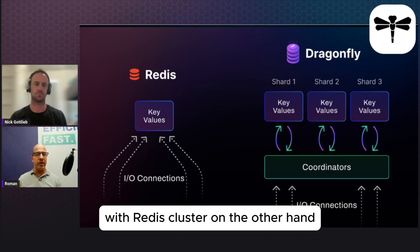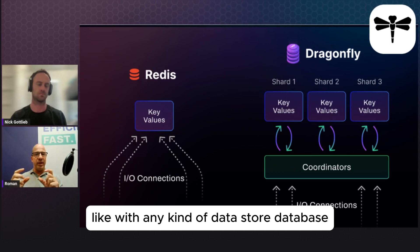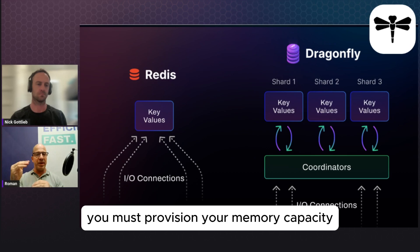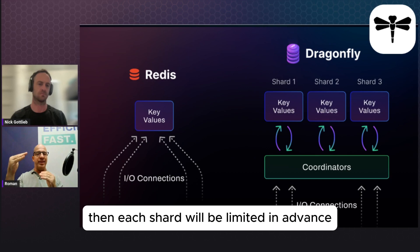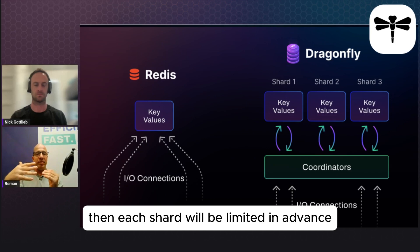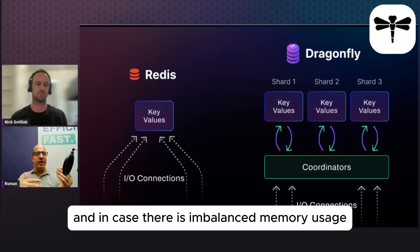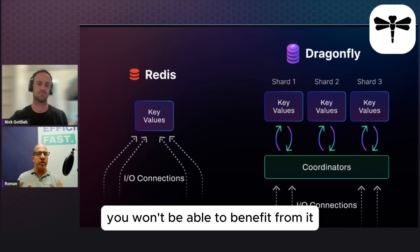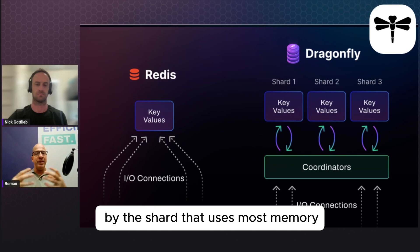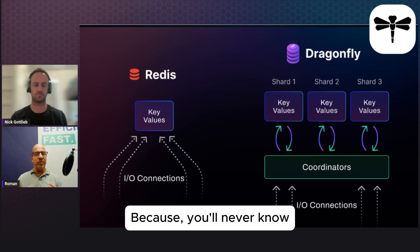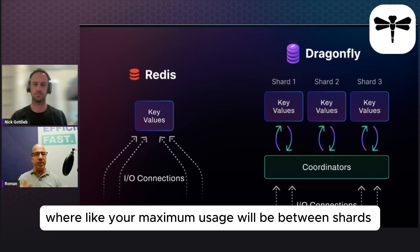With Redis Cluster, on the other hand, like with any kind of datastore database, you must provision your memory capacity for each shard. So if you run Redis Cluster on the same instance with multiple CPUs, each shard will be limited in advance by the memory it consumes. In case there is imbalance in memory usage, you won't be able to benefit from it — you'll have to provision your whole system by the shard that uses the most memory, because you'll never know where your maximum usage will be between shards.